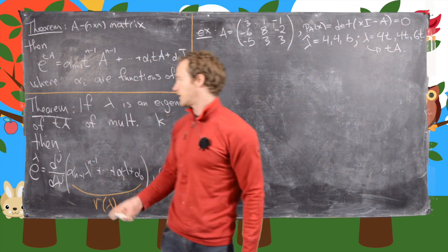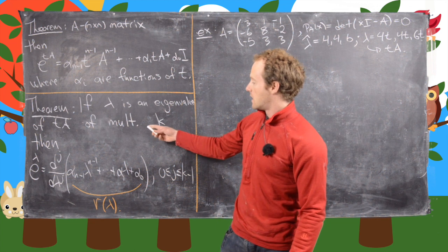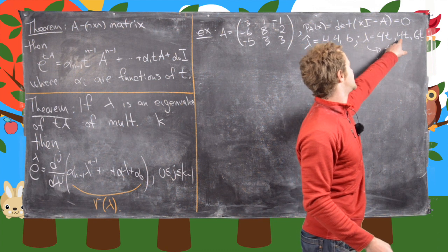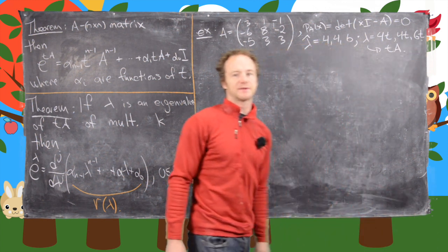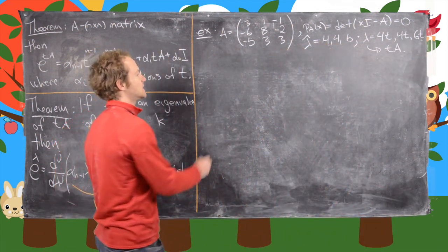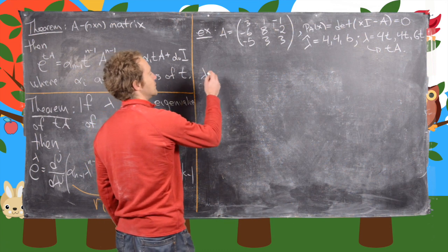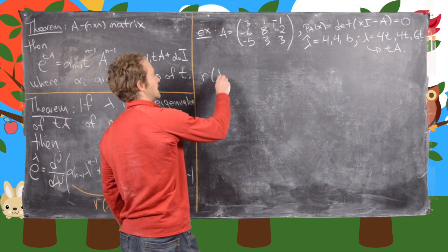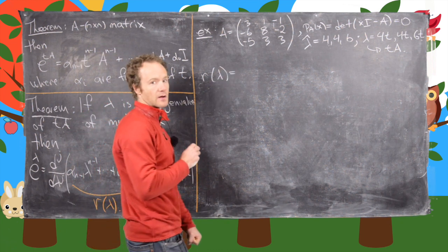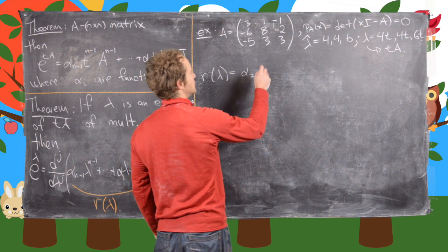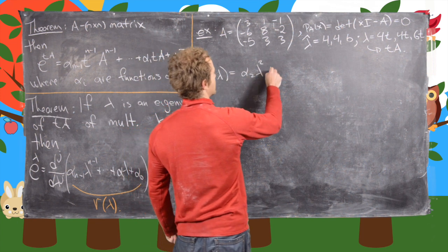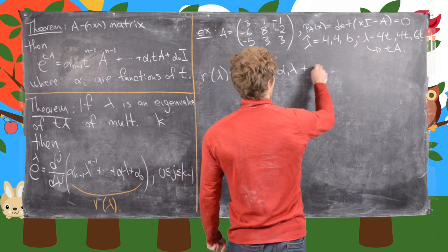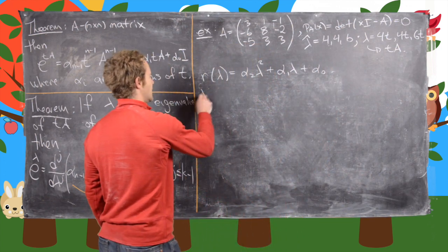Okay, so now we're ready to do the part where we apply this theorem. So we know we've got an eigenvalue of multiplicity 2—that's 4t—and one that's multiplicity 1, which is 6t. So let's do first the eigenvalue of multiplicity 1, which is 6t. But before we do that, we need to look in this case: our polynomial r(lambda) is alpha_2*lambda^2 + alpha_1*lambda + alpha_0.